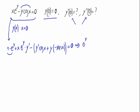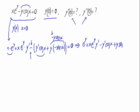Let's write this a bit clearer. Here, e raised to y, plus x times e raised to y times the derivative of y, minus — it changes the sign of everything inside the parenthesis — so we have minus the derivative of y times the cosine of x, plus y times the sine of x, equals 0.